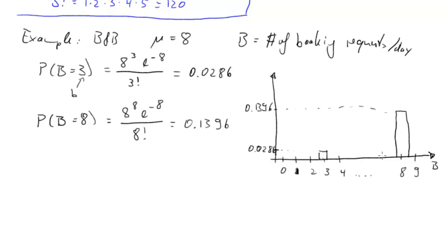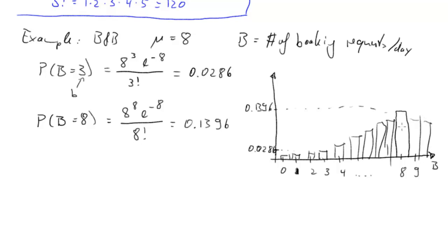In principle, the distribution is going to look something like a shape where probabilities are small at low values, grow, and then come back down. It turns out that the maximum probability actually happens at the mean of 8, and the probabilities will go down beyond that.